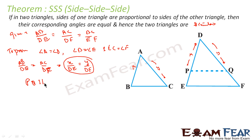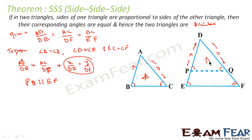By the proportionality theorem, PQ is parallel to EF. Since PQ is parallel to EF, angle P = angle E and angle Q = angle F. Since we have drawn DP = AB and the corresponding side equal, the two triangles are congruent by SAS. Therefore angle P = angle B and angle Q = angle C. Since angle B = angle P and angle P = angle E, we can say angle B = angle E. Similarly, angle C = angle Q and angle Q = angle F, so angle C = angle F.